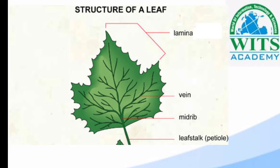اسے ہم midrip کہتے ہیں۔ اور جہاں سے leaf grow کرتا ہے اسے ہم leaf stalk کہتے ہیں۔ اور leaf میں جو shiny part ہوتا ہے اسے ہم lamina کہتے ہیں۔ اور leaf میں نسوں کی طرح جو structure نظر آتا ہے وہ veins ہوتی ہیں۔